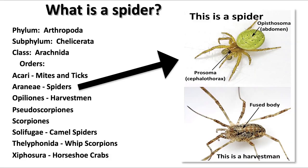The arachnids have eight legs, unlike the insects which have six legs. The class of arachnids is made up of a number of different orders: mites and ticks, spiders, harvestmen, pseudoscorpions, scorpions, and so on.